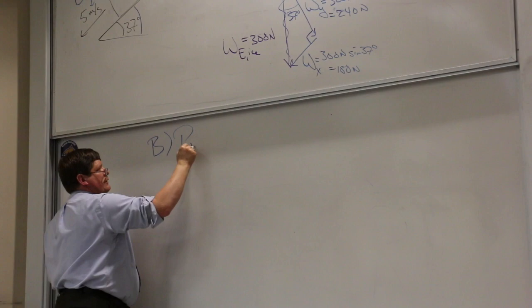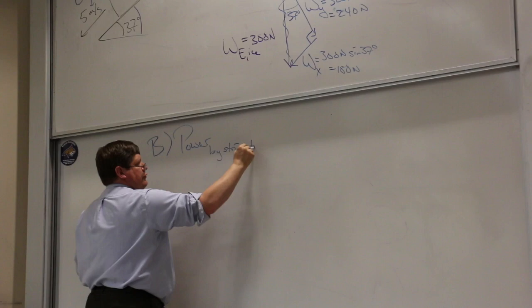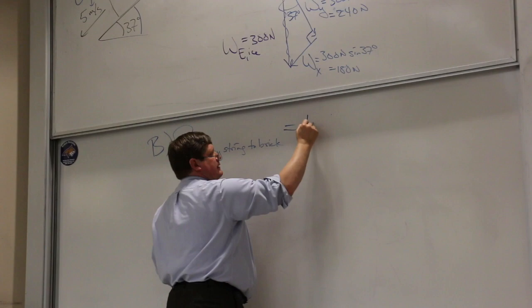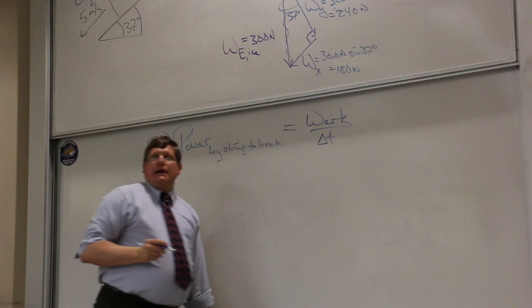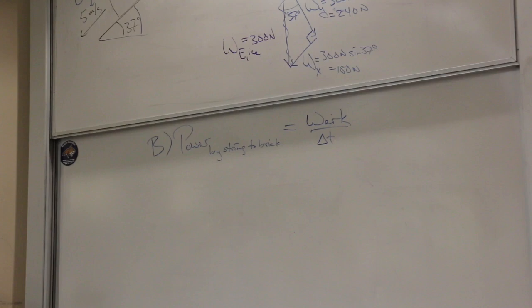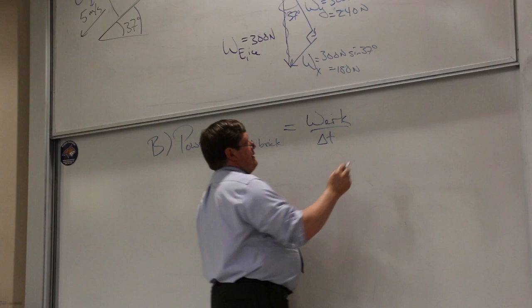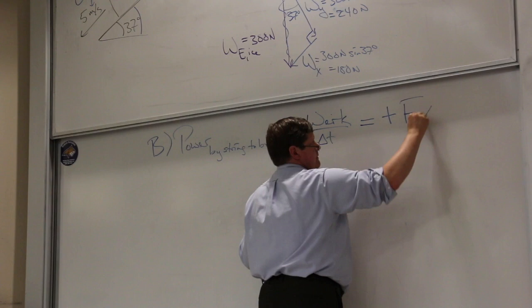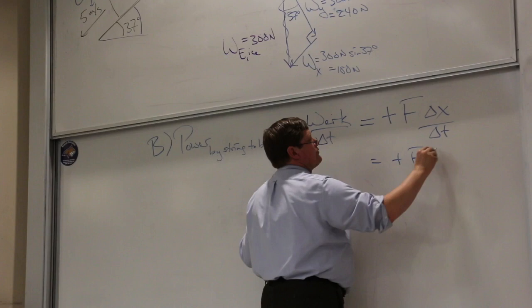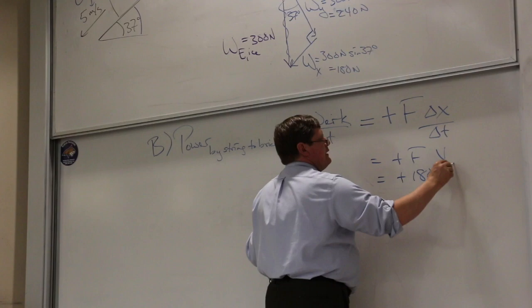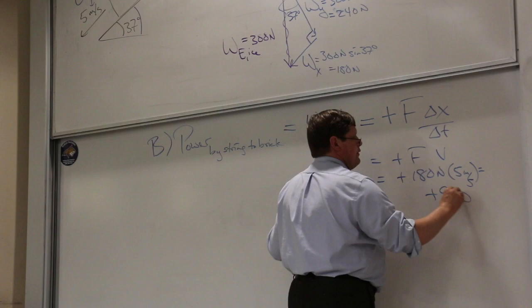Part B asks us to find the power delivered by the string to the brick. Power is the work done divided by the time. The string is pulling down the incline on the brick, and the brick is moving down the incline — that's positive work. So power equals force times speed: 180 newtons times 5 meters per second equals positive 900 watts.